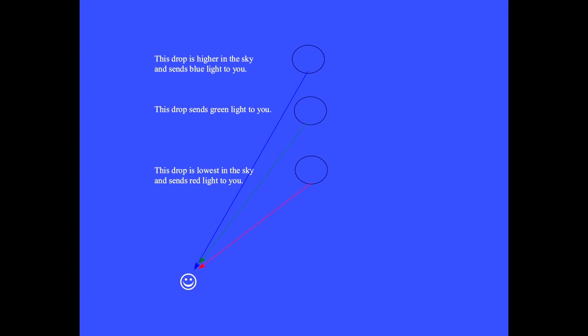Each drop tries with all of its might to make a rainbow bright enough for you to see, but it takes a zillion raindrops to produce a visible rainbow. The red that you see is actually coming from all the drops that are at the right height along this line.